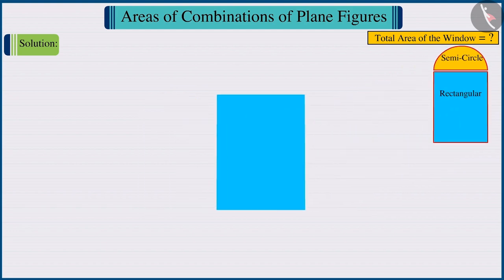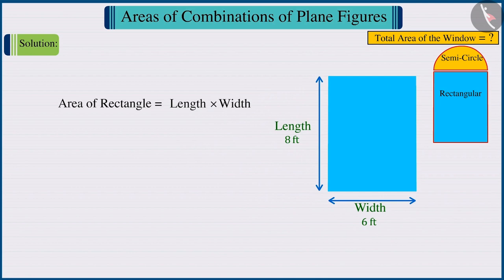The length of the rectangular portion is 8 feet and the width is 6 feet. Substituting these values in the formula for the area of a rectangle and solving, the area of the rectangular portion is 48 square feet.